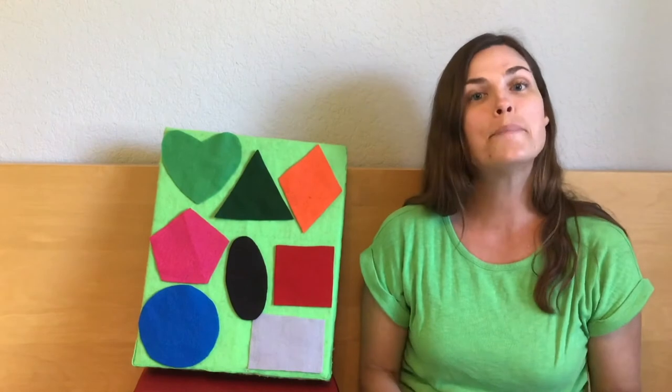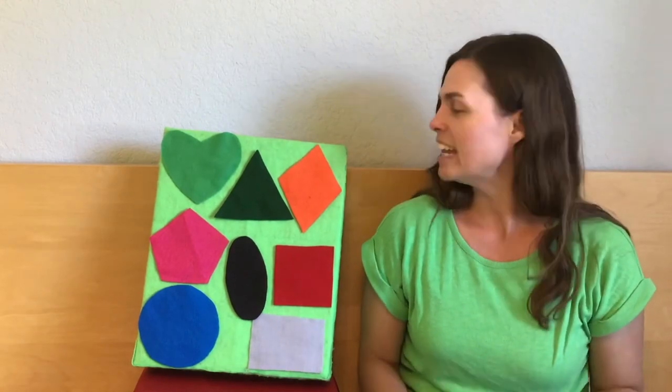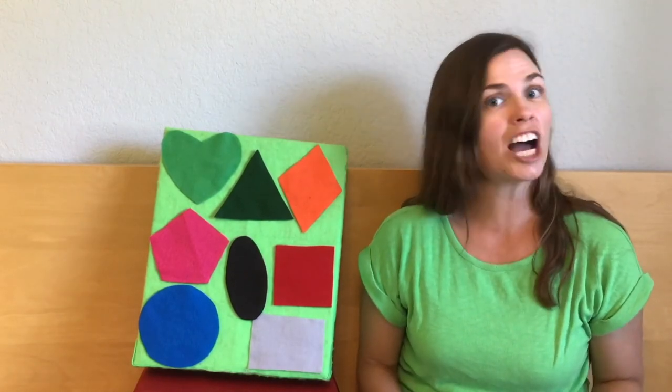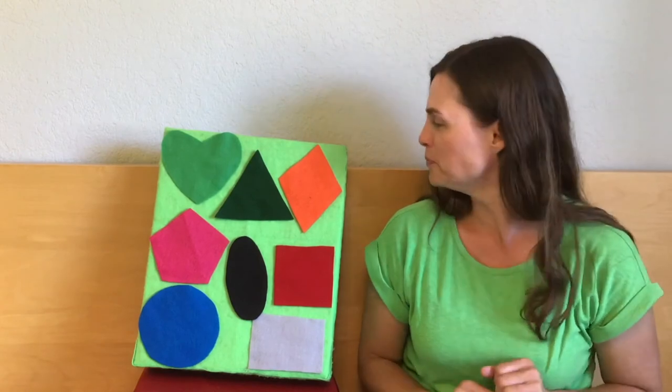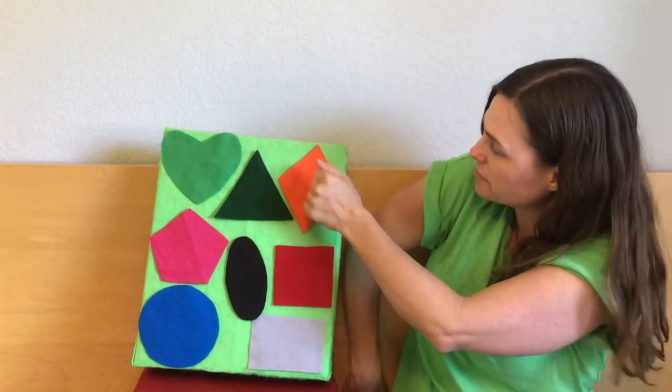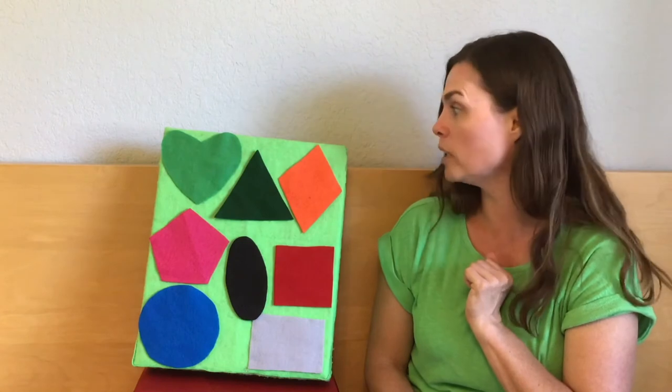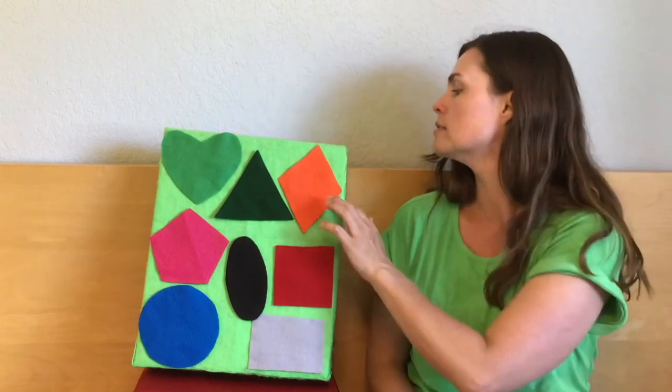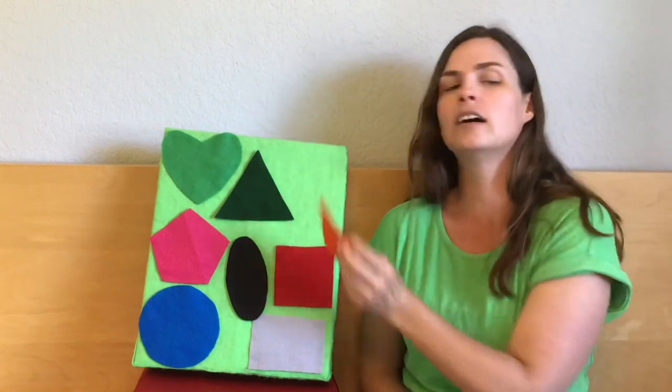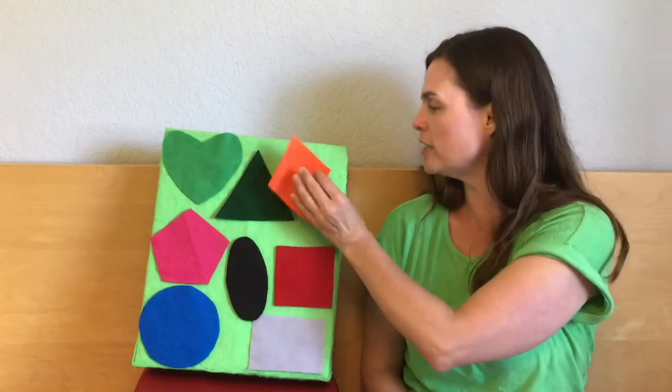Baby Roo. Baby Roo. Is an orange diamond hiding you? Baby Roo, are you behind the orange diamond rhombus? Good guess. Good guess, Knit Dolphin.